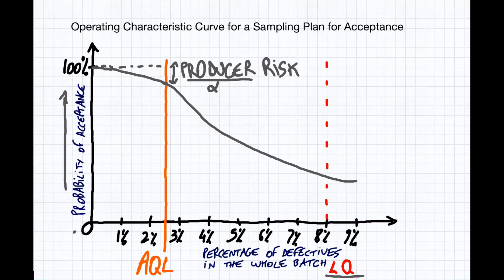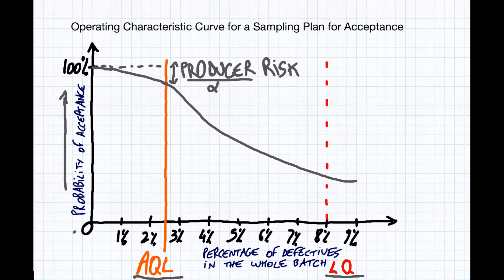There are other ways to call it — LTPD and so on. This is what they consider really, totally unacceptable quality. If you set the AQL at 2.5%, they consider this applicable for a continuous series of batches made by the same factory with the same components and same processes. The standard wants to keep the producer's risk low, at the expense of the consumer's risk.